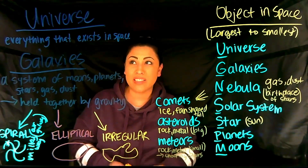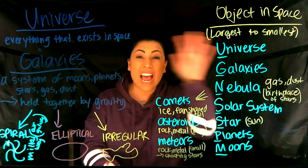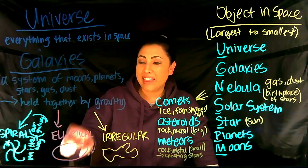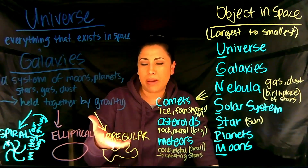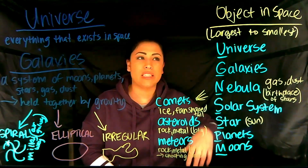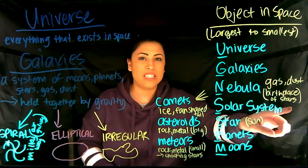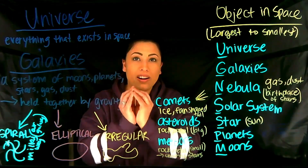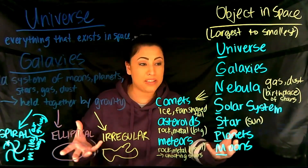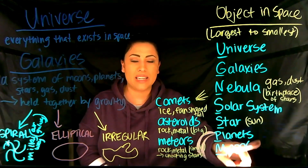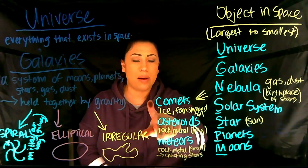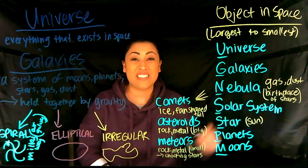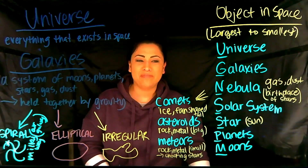So now we know all about the universe. The very largest is the universe — everything that exists. Zoom in and we have three types of galaxies: spiral, which is ours, the Milky Way; elliptical; and irregular, which has no defined shape and is actually pretty rare. Then we have objects in space: universe, galaxies, nebula — the birthplace of stars — solar system, star, planets, and moons. Comets are made of ice with a fan-shaped tail; asteroids and meteors are rock and metal — asteroids are big, meteors are small and are the shooting stars you see at night.